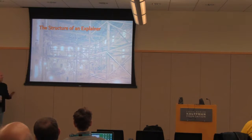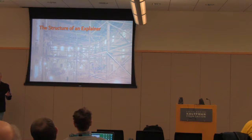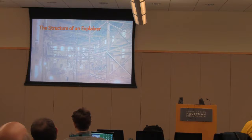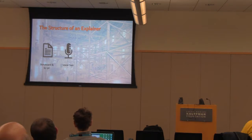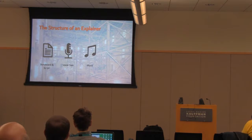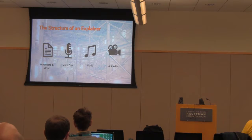The structure of an explainer video is actually very easy. There are really only four things you need to keep an eye on: first, your storyboard and script; next, your voiceover; after that, your music bed — very important; and finally, the animation. If you can address those four things, you have the structure for an explainer video.